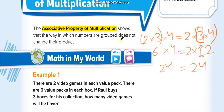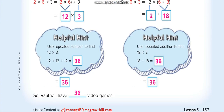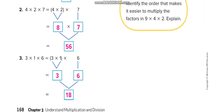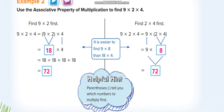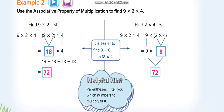The associative property states that we can change the grouping. We can switch the order of the groups — similar to how in the commutative property we were changing the order of the numbers themselves.